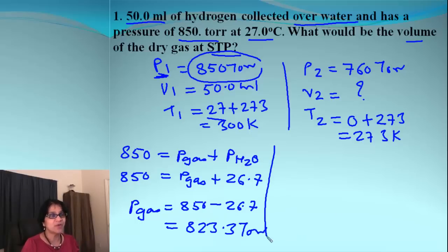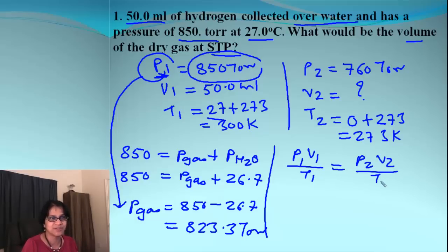What do we do next? Now we are going to use the pressure of the dry gas and simply use the combined gas law P1 V1 over T1 equals P2 V2 over T2. Remember, this pressure is going to be the pressure which we got for the dry gas.